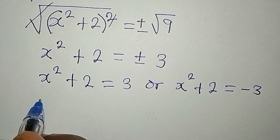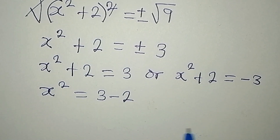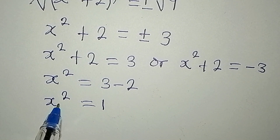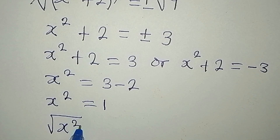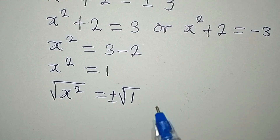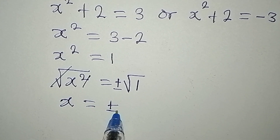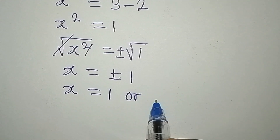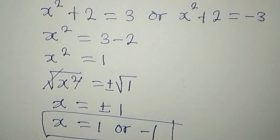Let's deal with the first one. From x squared plus 2 equals 3, we get x squared equal to 3 minus 2, which means x squared equals 1. Taking the square root of both sides to eliminate the square, x equals plus or minus the square root of 1, which is 1. So x equals 1 or x equals negative 1 — two real solutions from this equation.